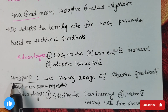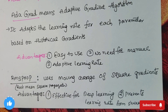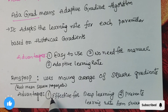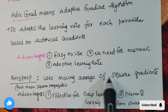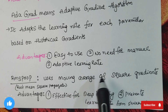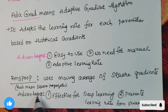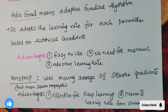RMSProp (Root Mean Square Propagation) uses a moving average of squared gradients to adapt the learning rate. Its advantages are that it is effective for deep learning and it prevents the learning rate from shrinking too much.